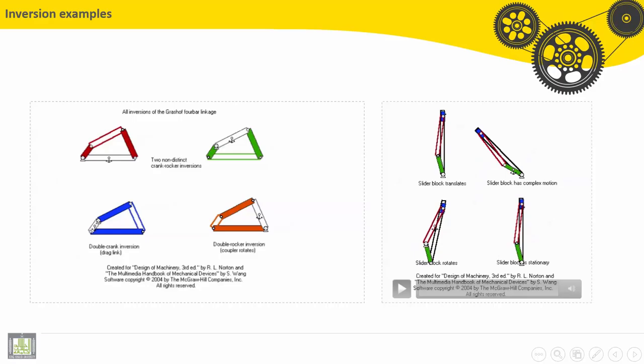You can see for the first one here, slider block translates. For this one, slider block has complex motion. Let's see. Let's follow the slider crank motion.